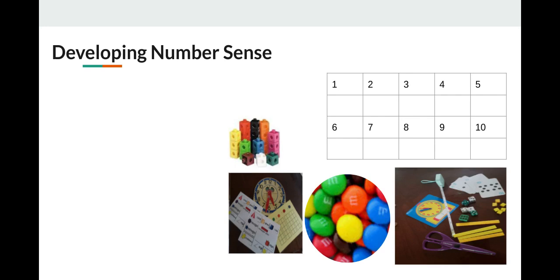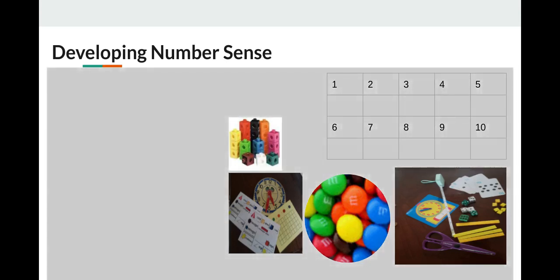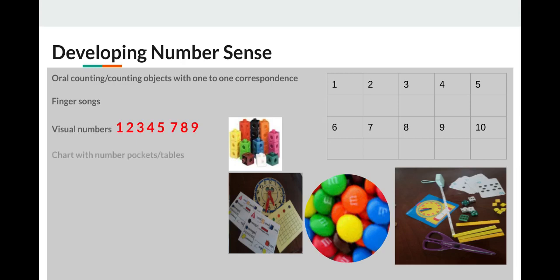So let's talk about how we can develop number sense. There are many ways that will help you with developing number sense. Some of the things that are very basic are oral counting, counting objects with one-to-one correspondence, finger songs (remember the songs about five little ducks, five little monkeys, that also help with one-to-one correspondence), visual numbers, and charts with number pockets and tables. The chart that you see here is very easy to make, and you can make it on a simple poster board or a piece of paper.